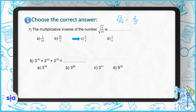Question 8: 3 to the power of 10 plus 3 to the power of 10 plus 3 to the power of 10. We are adding the same number three times, so this equals 3 times 3 to the power of 10, which is 3 to the power of 1 times 3 to the power of 10, giving 3 to the power of 11. The right answer is choice C.